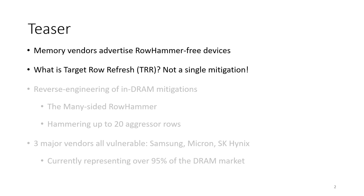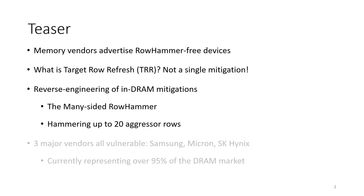But what is target row refresh? Very little is known about its workings, since there is no standard and memory vendors do not release any actual implementation details. Today I'm going to demystify some target refresh mechanisms, showing that it is not the mitigation we thought, but rather a more general term identifying a whole class of mitigations. We reverse-engineered its design embedded directly inside the DRAM circuitry, leading us to discover a new hammering pattern: the many-sided rowhammer. Hammering a huge number of rows — up to 20 — allowed us to bypass the mitigation.